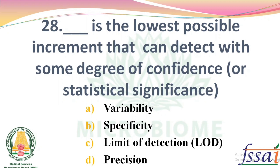Dash is the lowest possible increment that can be detected with some degree of confidence or statistical significance. Options: Variability, Specificity, Limit of Detection, Precision. The right answer: Option C, Limit of Detection.